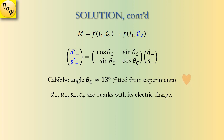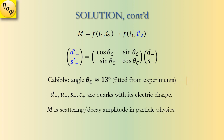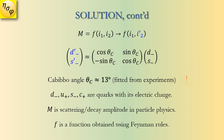Relating to physics: u, d, s, and c are quarks with their respective electric charges. m represents the scattering or decay amplitude in particle physics, and f is a function obtained using Feynman rules.